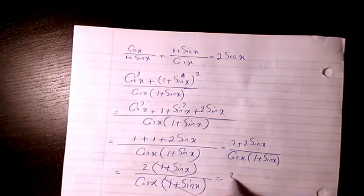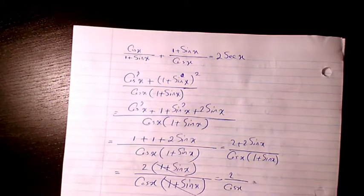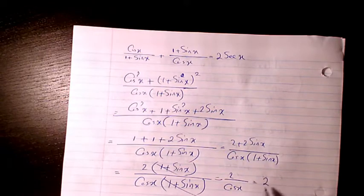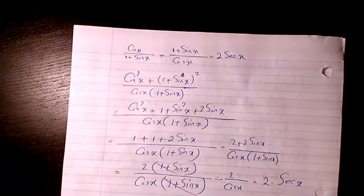So these two cancel out and the answer will be 2 over cosine x. And cosine is the inverse of secant, so it's going to be 2 times secant x.